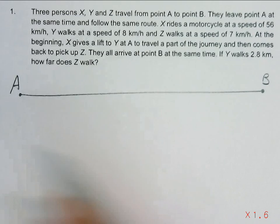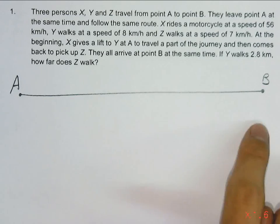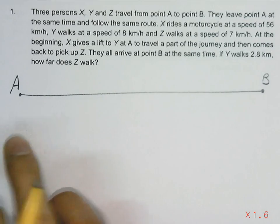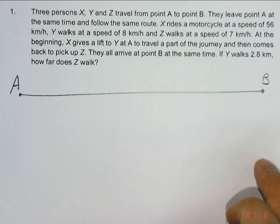Let's draw this diagram to represent this question. I have two points here, A and B. So X, Y, Z are going to leave point A, and they will all arrive at point B at the end of the question.